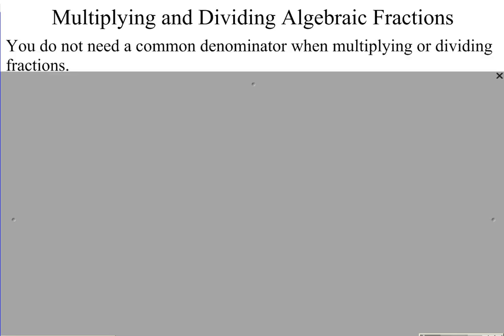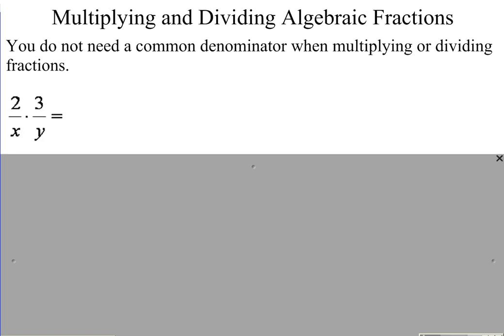Multiplying and dividing fractions, much simpler than adding or subtraction. The reason it's simpler is you do not need a common denominator when multiplying or dividing any two fractions in any form. You can multiply or divide in the current form without having to change anything. When we multiply fractions, multiply straight across the top, straight across the bottom, simplify and you're done. 2 times 3 is 6, x times y is xy. Nothing I can simplify there.